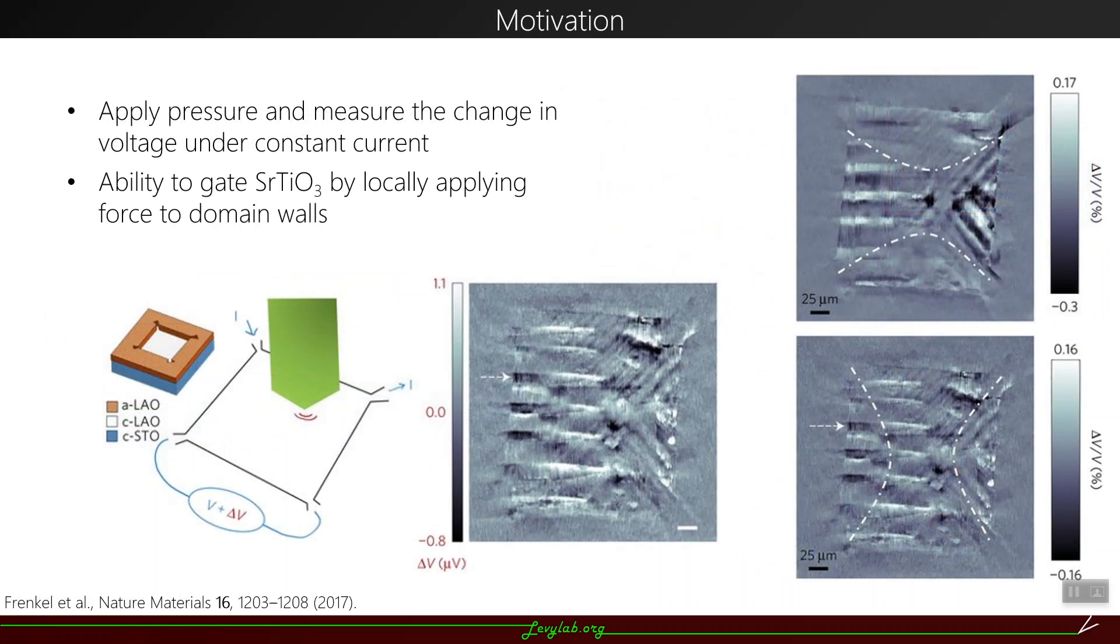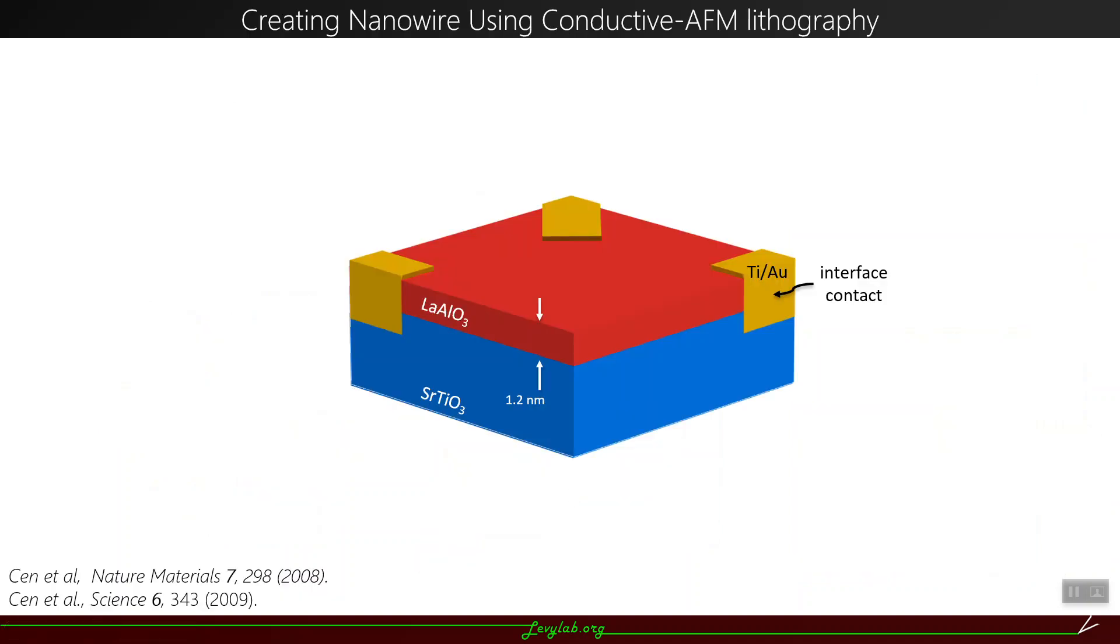There's another type of local probe that is a strong motivation for this experiment, done by Franken et al., which essentially applied pressure and measured the change in voltage under constant current. By locally applying force to the domain walls, they're able to gate strontium titanate. These are all two-dimensional properties that have been looked at in lanthanum aluminate strontium titanate.